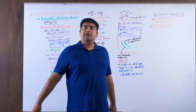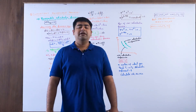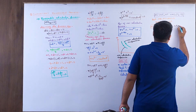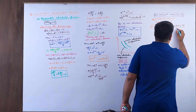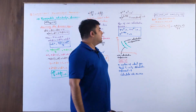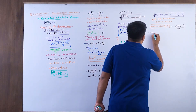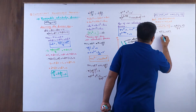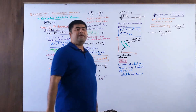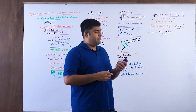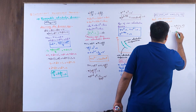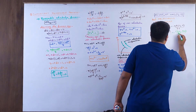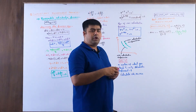Now, Cᵥ can be written as R/(γ−1), so delta W = −nR(T₂ − T₁)/(γ−1). Since nRT₂ = p₂V₂ and nRT₁ = p₁V₁, we can also write: delta W = −(p₂V₂ − p₁V₁)/(γ−1). So delta W has two equivalent formulas: −nCᵥ ΔT and −Δ(pV)/(γ−1).